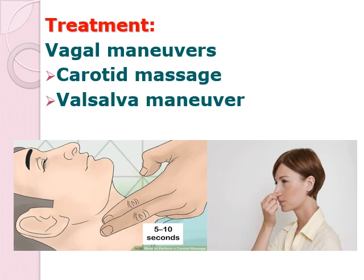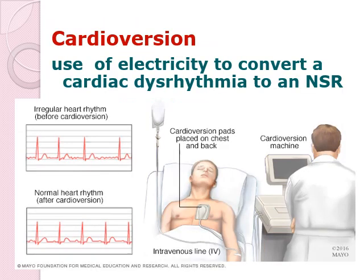Treatment: since there is an increase in rate, our treatment is focused on stimulating your parasympathetic nervous system. Recall your vagal maneuvers such as carotid massage and the Valsalva maneuver. Whenever there is an increase in rate, your management will be towards the stimulation of your vagal maneuvers, or that will be your parasympathetic nervous system.